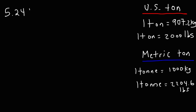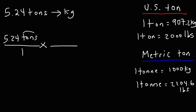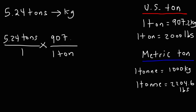Try this one. Let's say we have 5.24 U.S. tons — not metric tons. How many kilograms is that? Starting with 5.24 tons over 1, this time we use the U.S. ton conversion factor. We put 1 ton on the bottom right and 907.2 kilograms on the top of the second fraction. The unit tons cancel, and we multiply: 5.24 times 907.2 equals approximately 4,753.7 kilograms.